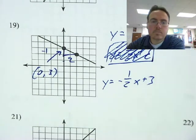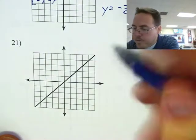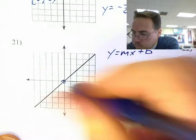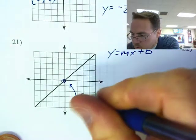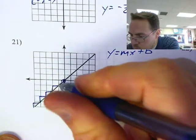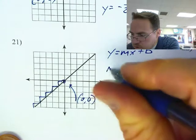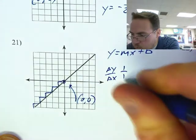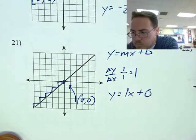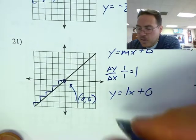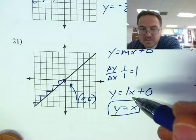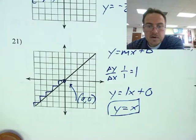Number 21. y equals mx plus b is the format. We cross the y-axis at (0, 0). It's up 1 over 1, up 1 over 1 — the slope is 1. That means y equals 1x plus 0, but since 1x is just x and there's no point adding plus 0, the equation simplifies to y equals x.